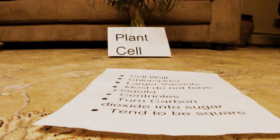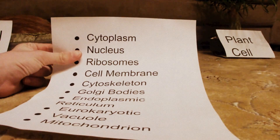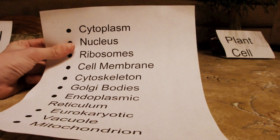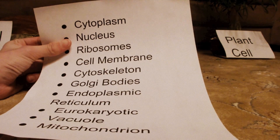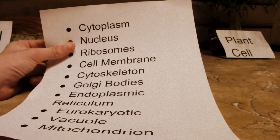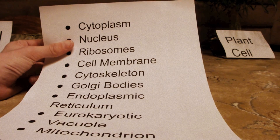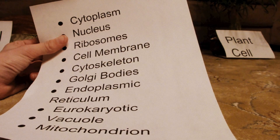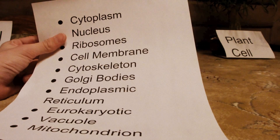Moving on to things that are common between them. The cytoplasm, which holds and supports the organelles. The nucleus, which contains DNA. The ribosomes, which make protein. The cell membrane, which controls what can enter and leave the cell. The cytoskeleton, which has protein fibers and supports the cell. Golgi bodies, which package things for export from the cell. It also has endoplasmic reticulum, both rough and smooth, used for mRNA and protein transport.